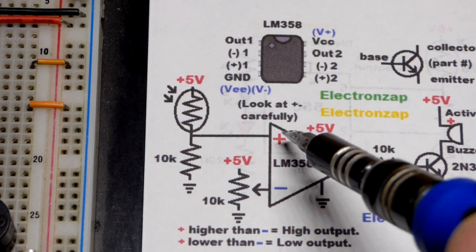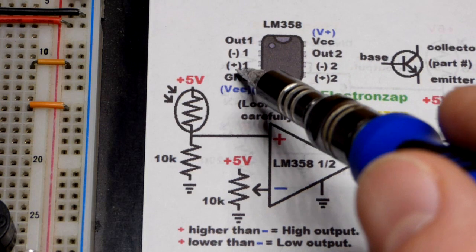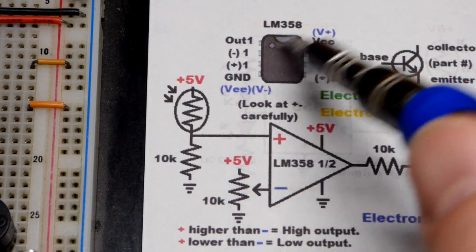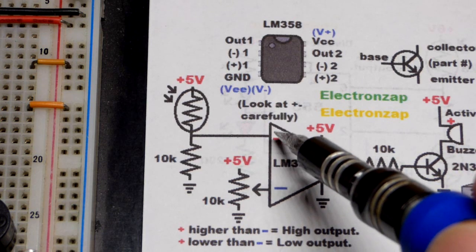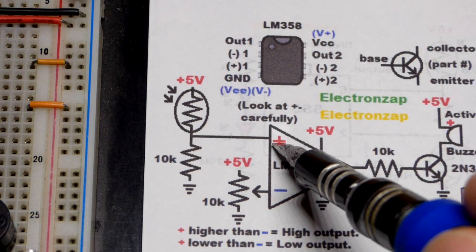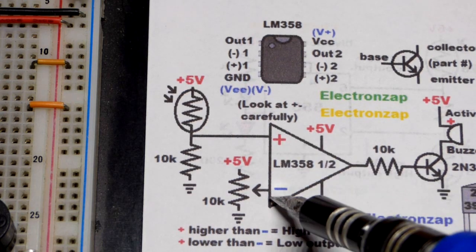You notice on the schematic that the plus is on top, whereas with the physical component the plus is on bottom. The physical component you can't change anything about it. But schematic sometimes the minus, the inverting, is on top and the plus, the non-inverting, is on bottom. You got to pay close attention to that.